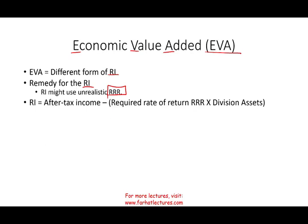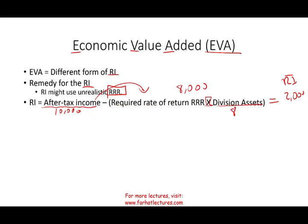How do we compute residual income? Simply put, we take after-tax income, then subtract the required rate of return times the divisional asset. For example, if after-tax income is $10,000 and we have $80,000 of division assets at a 10% required rate of return — giving us $8,000 — we have $2,000 of residual income.